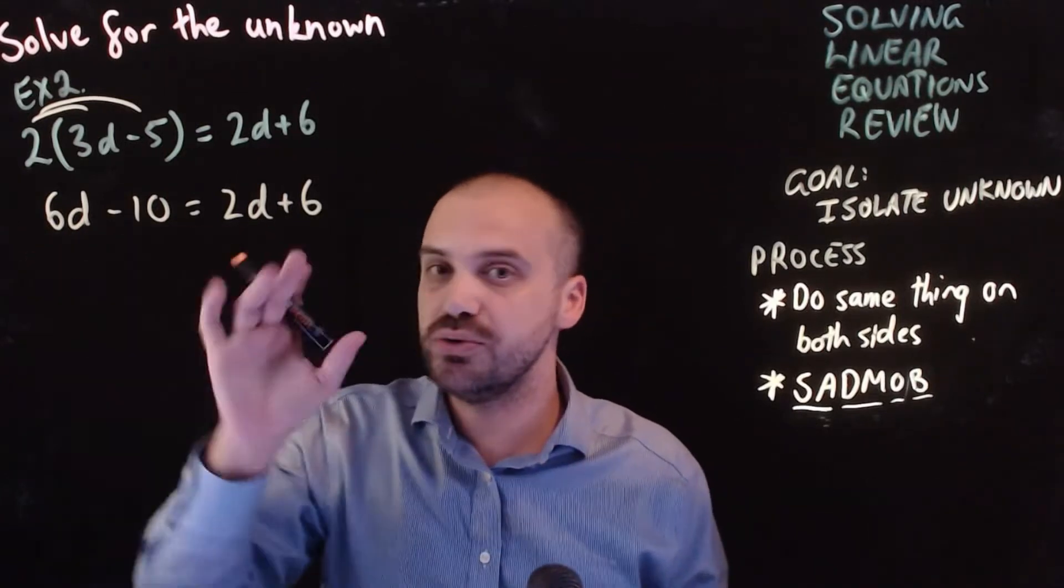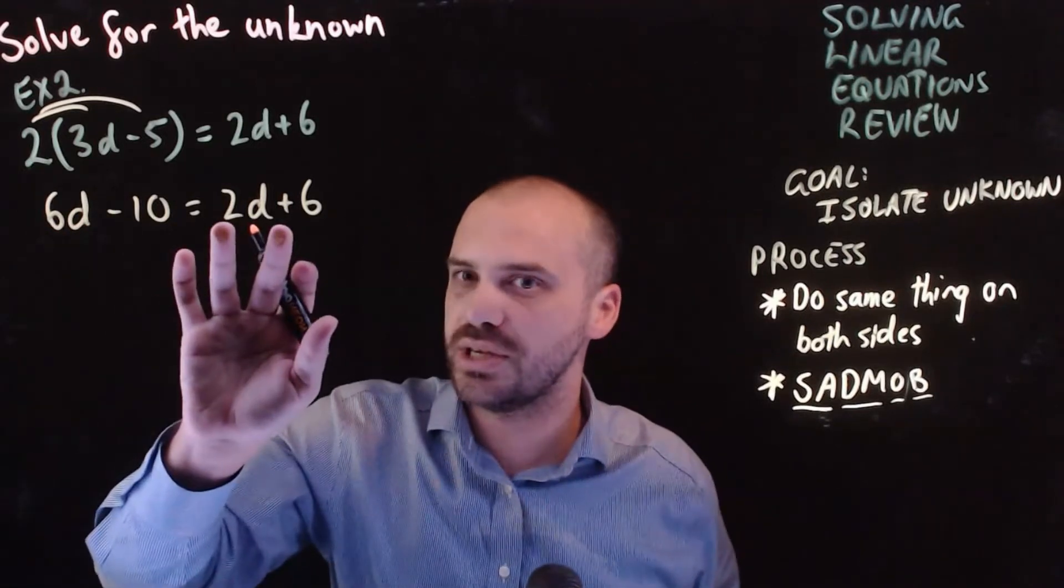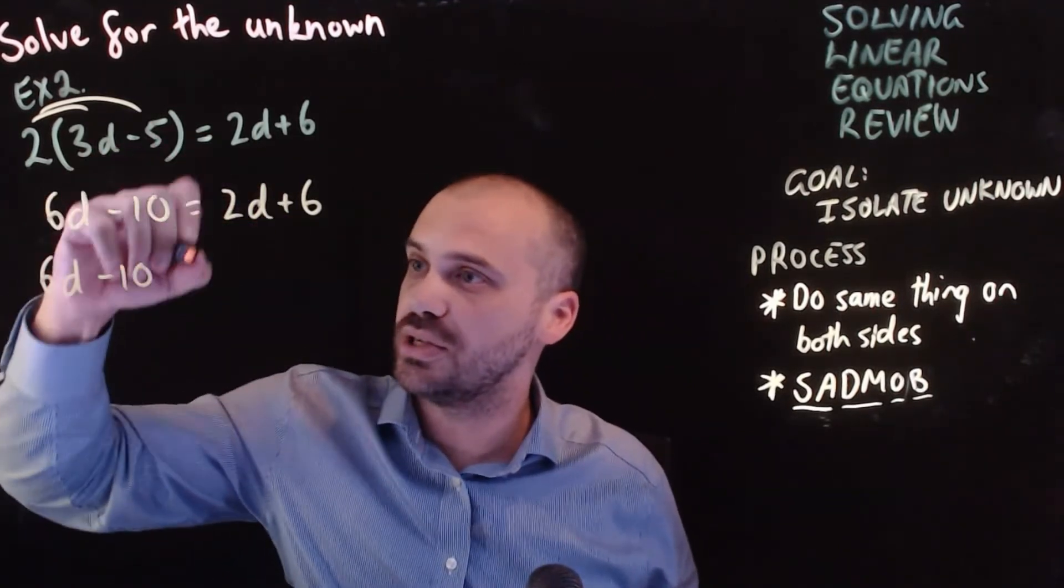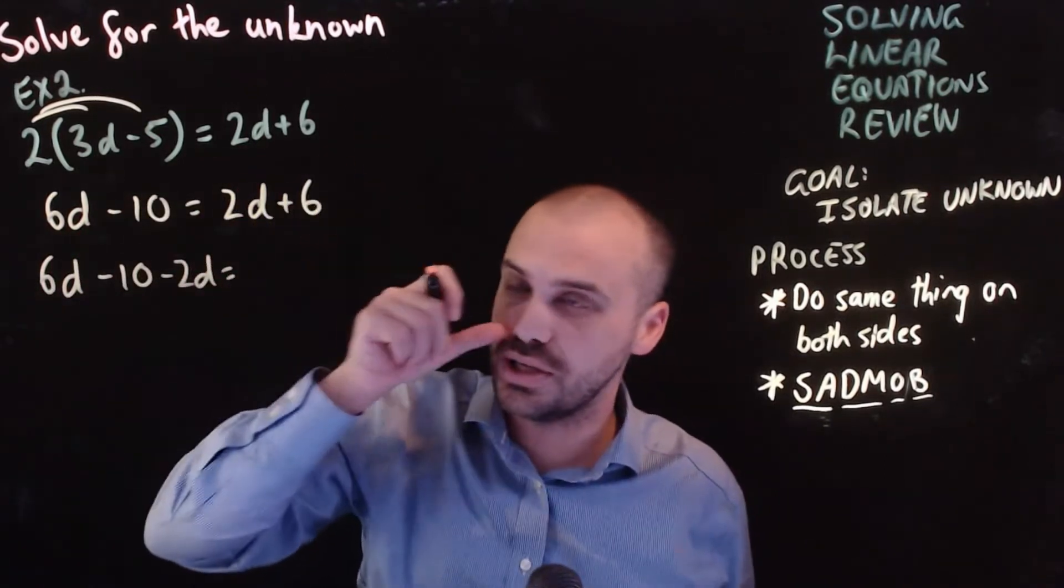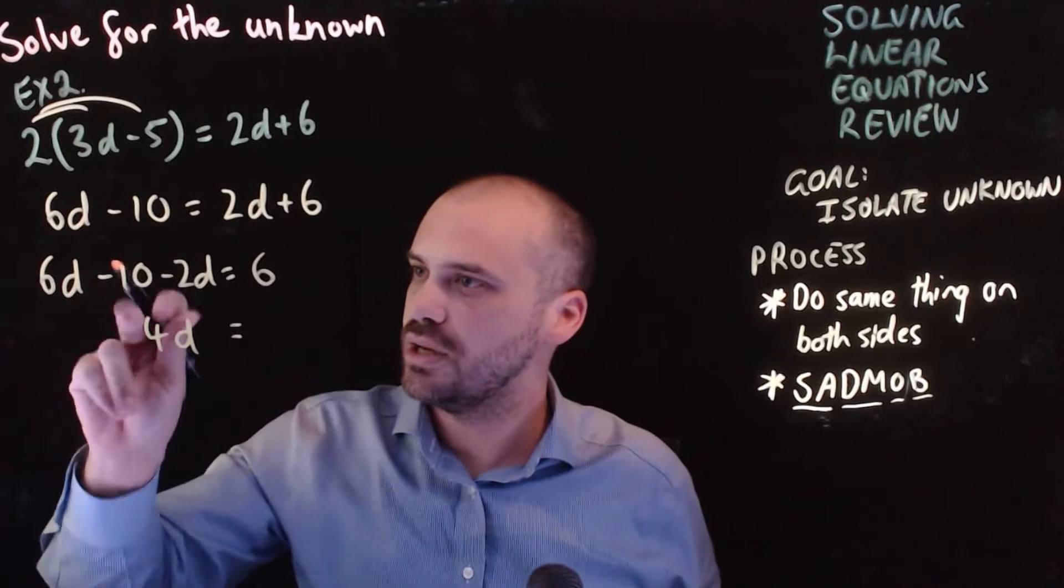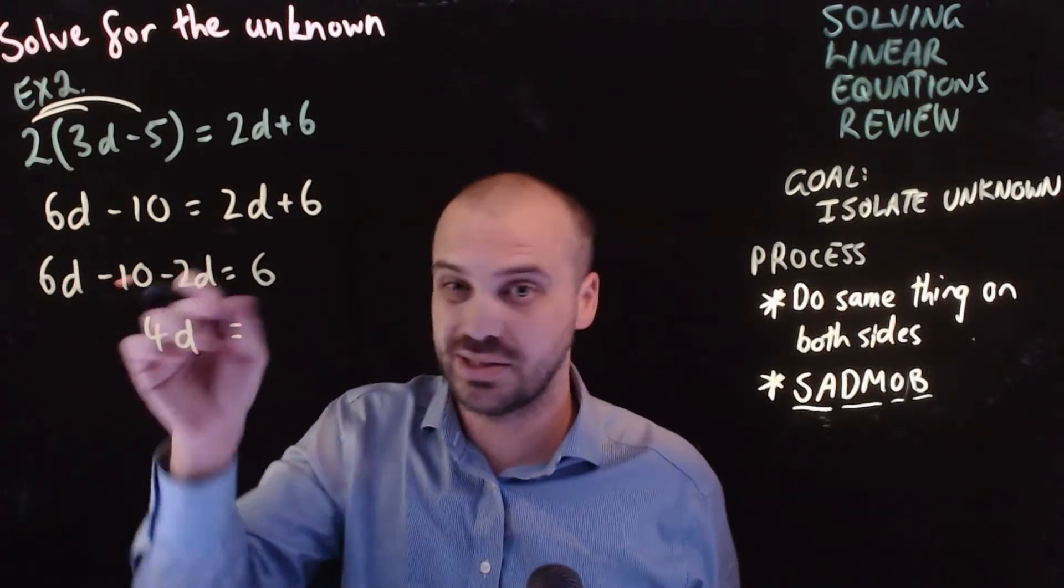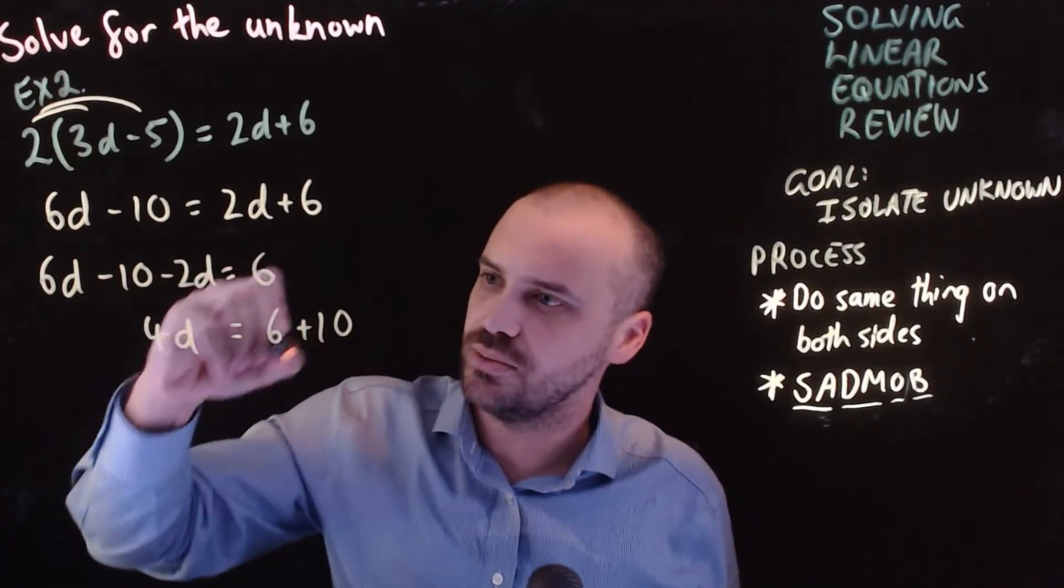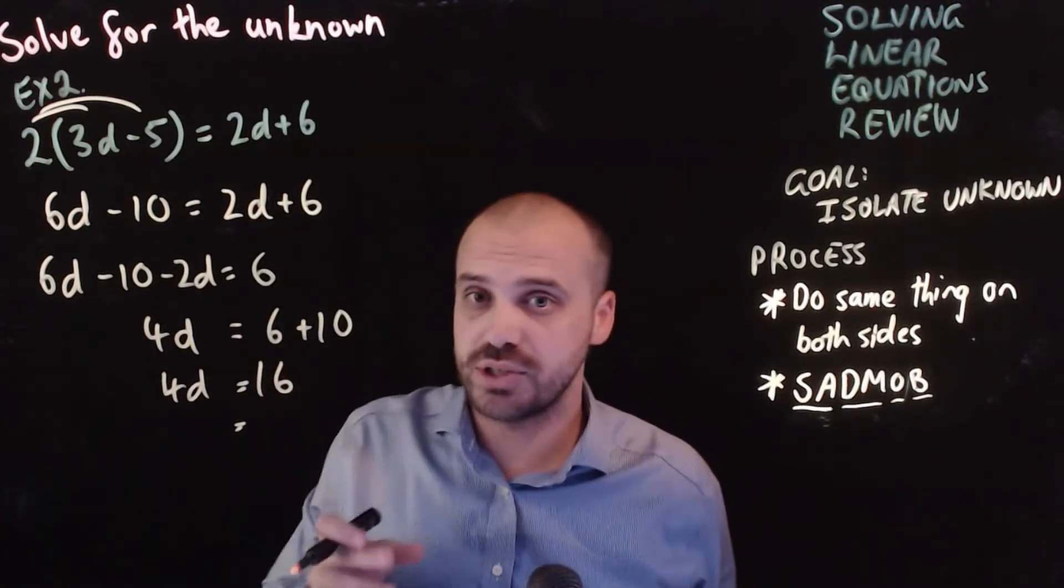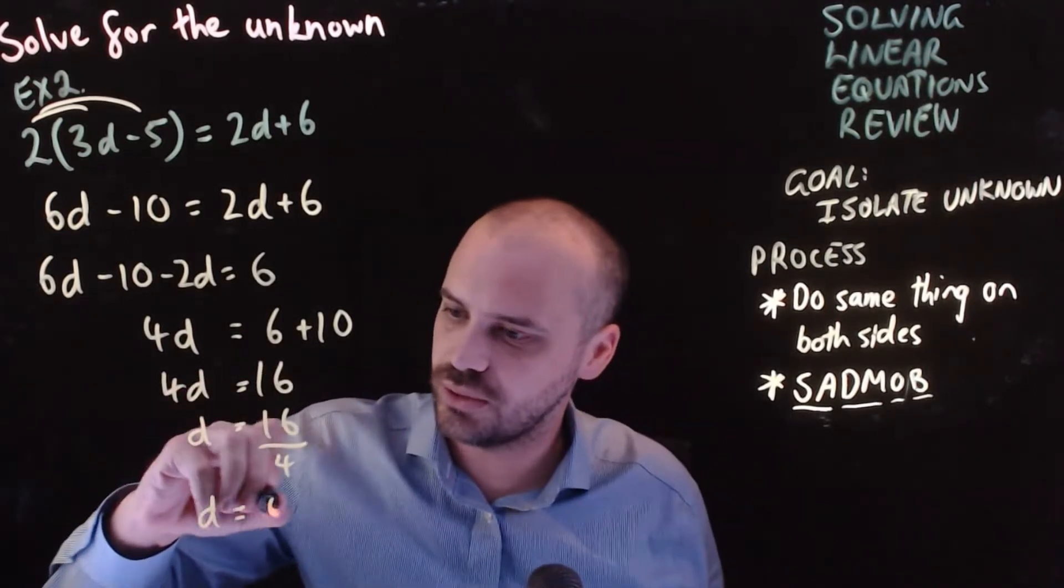Next step here, I need to get all of the 2ds onto one side. So, I have a 6d here. I have a 2d here. If I subtract 2d from both sides, that will have the effect of bringing that 2d over to here. And 2d minus 2d, I'll just be left with 6 on this side. All right. Finally, 6d minus 2d is 4d. I'll add 10 to both sides. Now, adding 10 to this side will mean that the 10 disappears. Adding 10 to this side will make it look like this. We have 4d equals 16. And finally, I can divide both sides by 4. 4d divided by 4 is simply d. And 16 divided by 4, that will equal 4.